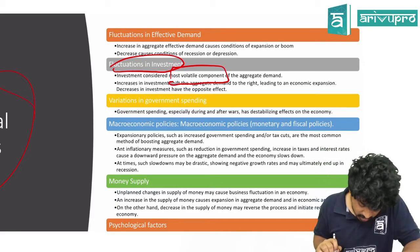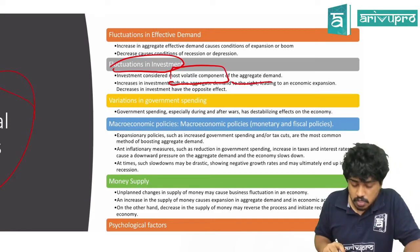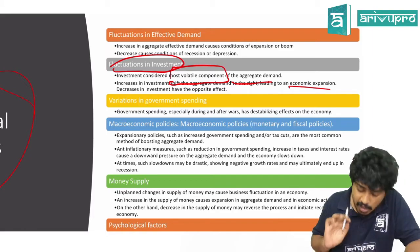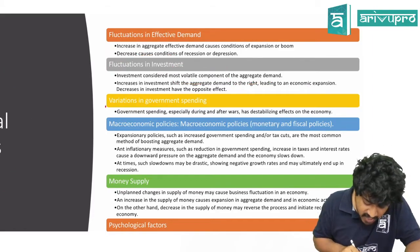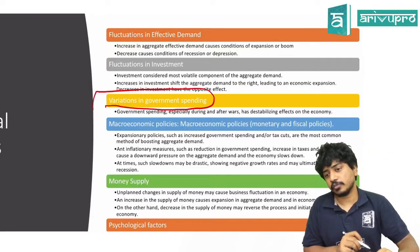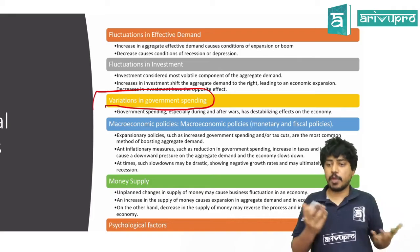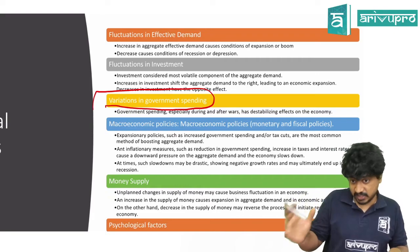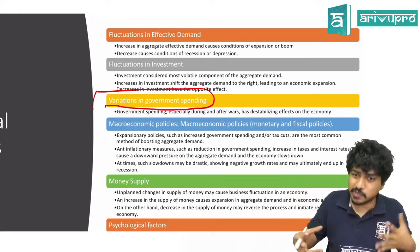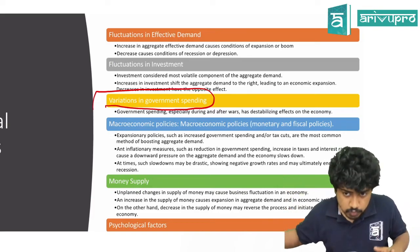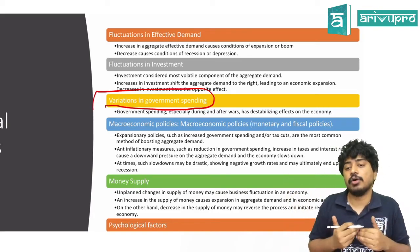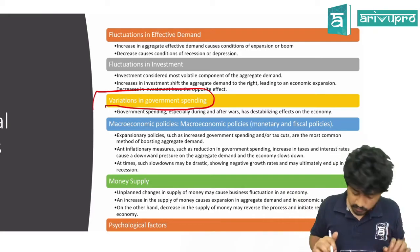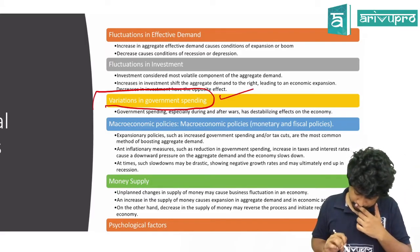Increase in investment shifts aggregate demand to the right, leading to economic expansion; decrease has the opposite effect. Variation in government spending: if government spends more, more people get employed — roads, bridges, vaccines — more inputs manufactured, good for the economy. If they spend less, fewer people benefit and the economy is affected.